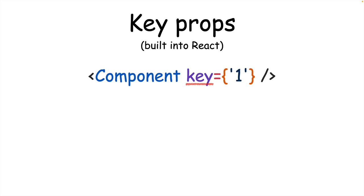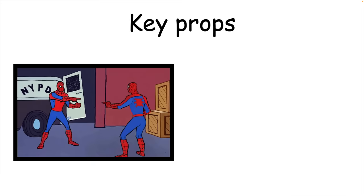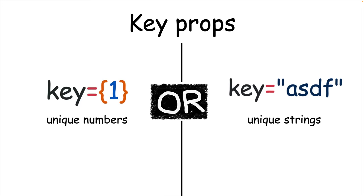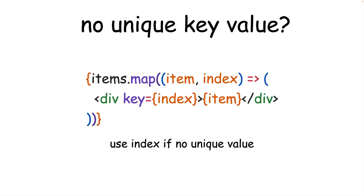The key prop is another built-in prop to React. Unlike the name implies, it doesn't unlock anything interesting. The key prop is used so React can tell one component apart from another, usually when you're creating a list with the map function. A key is just a unique string or number to identify a component. You'll usually know when you need to add a key because React will warn you in the console. If you don't have a unique value for each item, you can always use the current index from the map function.